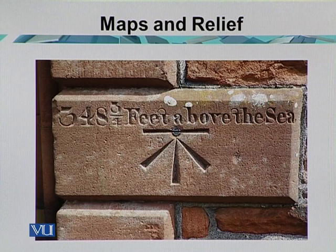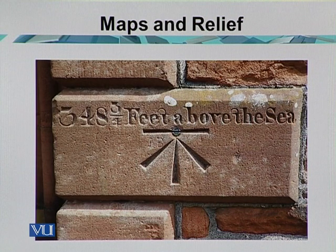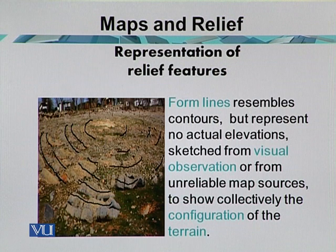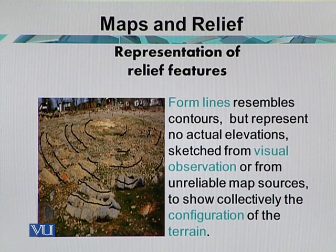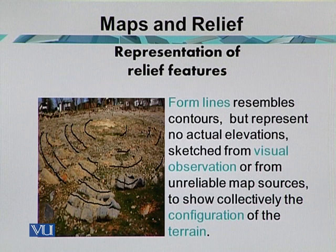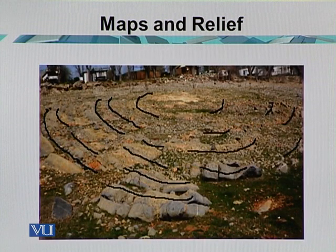Here we have the height of the place written on the building side, which is 348 feet above sea level. Form lines resemble contours but represent no actual elevation. They are sketched from visual observation or from unreliable map sources to show collectively the configuration of the terrain.